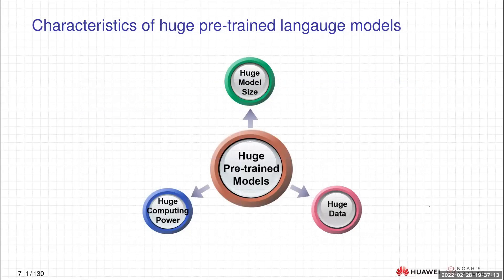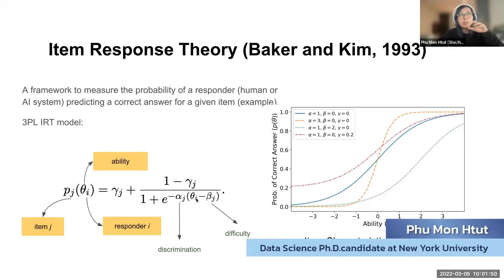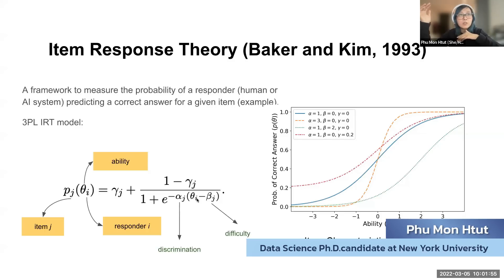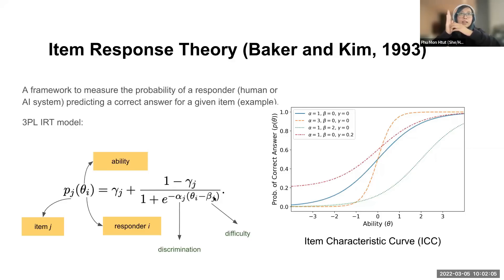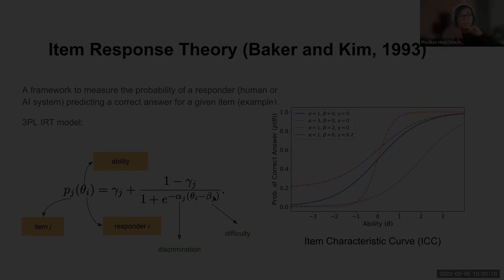Beta is the ability and beta is the difficulty. So if ability is higher than difficulty, we are going to have a higher probability of a positive outcome. If the ability is lower than difficulty, meaning the student does not have the ability to answer that level of difficult questions.